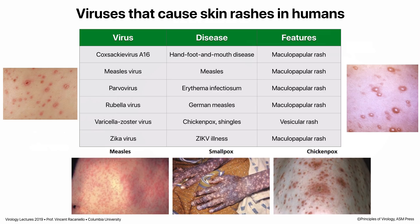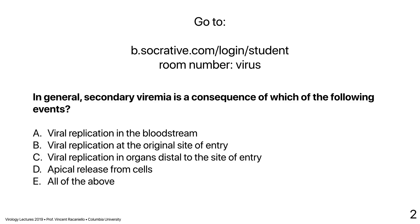A secondary viremia is a consequence of viral replication in organs distal to the site of entry — that is the definition. Replication in the bloodstream could contribute, but it usually results from replication in a tissue. The primary viremia is caused by virus replication at the site of entry; that spreads to somewhere else and then you get the secondary infection from those distant sites. The key is to understand the difference between primary and secondary viremias.